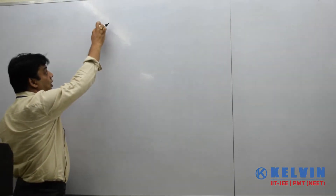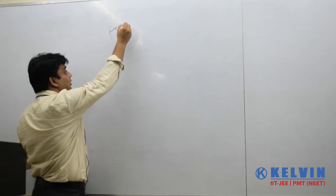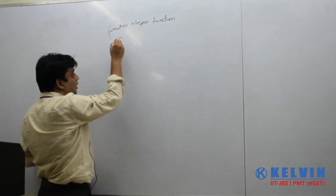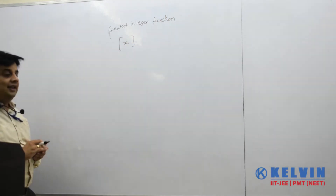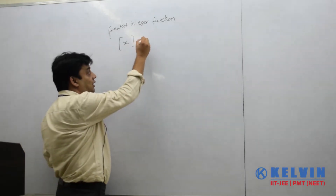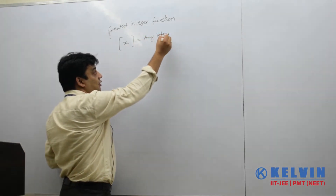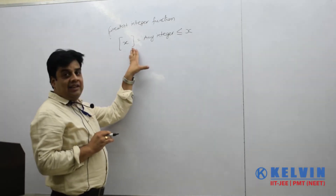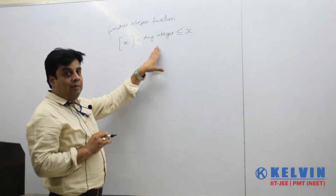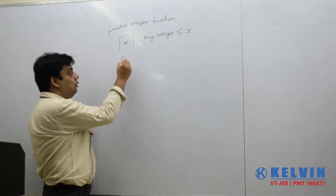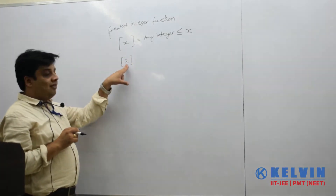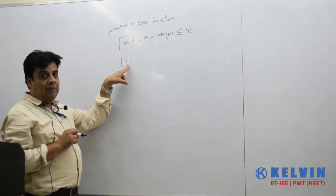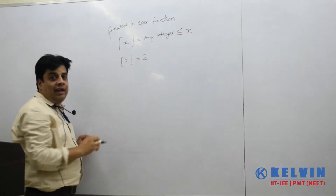This is how we denote the Greatest Integer Function. The symbol we use to denote it is defined as: the Greatest Integer of x is any integer less than or equal to that number. For example, if the number is 2, the greatest integer will be 2, because 2 is equal to an integer.